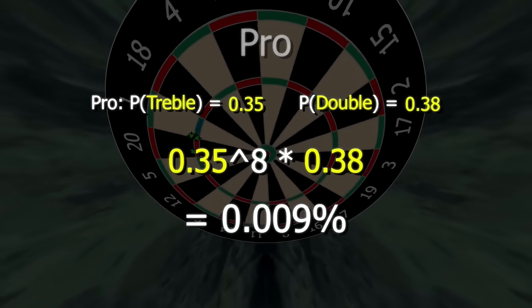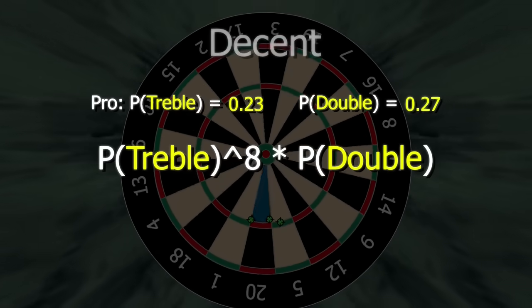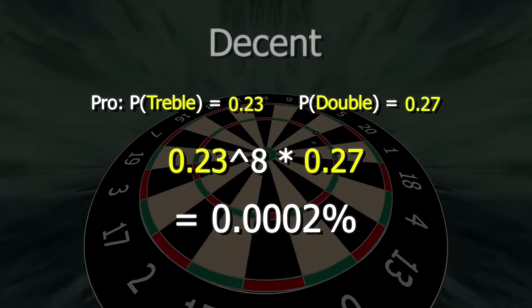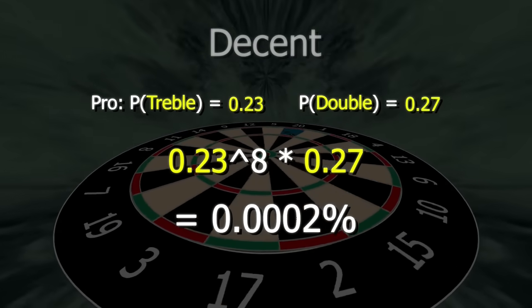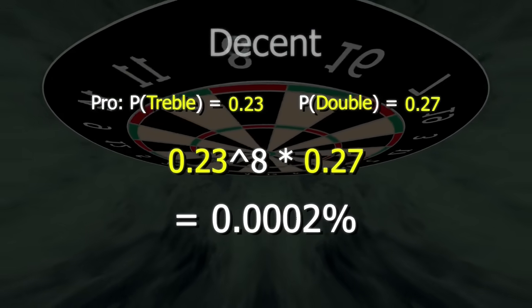So for your decent player, that's 0.23 to the power of eight times 0.27, or 0.0002%. That's one in 500,000. So at a leg a minute, that would take 8,333 hours, or almost a year of non-stop throwing.